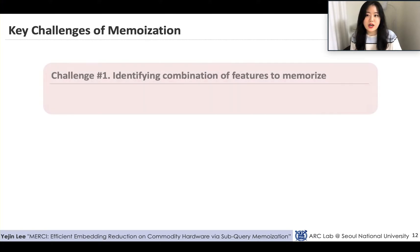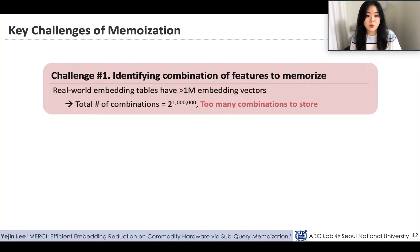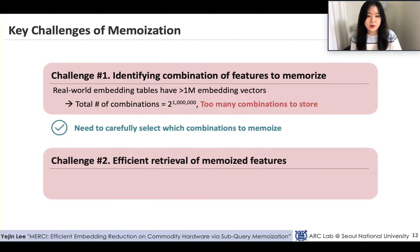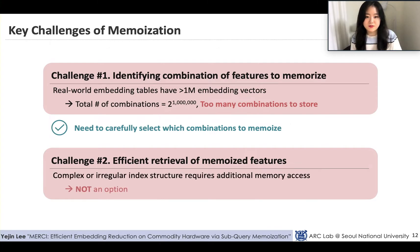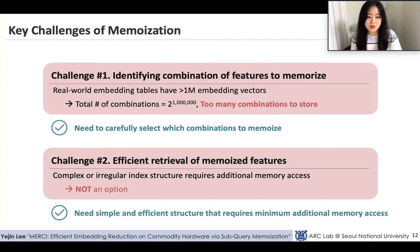The first challenge is to identify the combinations of features to memoize. Since real-world embedding tables have more than one million embedding vectors, the total number of possible combinations exceeds 2 to the power of one million, making it very important to carefully select which combinations to memoize. The second challenge is the efficient retrieval of memoized features. Identifying whether a certain combination is memoized, and finding the exact location of its result, is very difficult. Using a complex or irregular index structure is not an option, as it can cause more memory accesses than the original operation. We need a simple and efficient structure with minimum additional memory accesses.